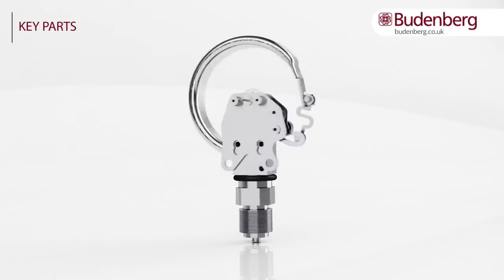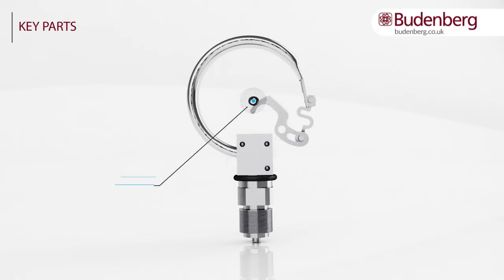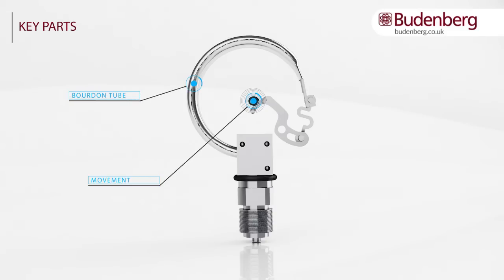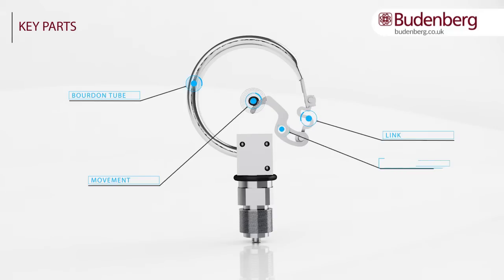The key parts within a Bourdon tube pressure gauge include the movement, which includes the hairspring, gears and linkages. A C-shaped Bourdon tube which is typically bent at an angle of 270 degrees and has a closed end. A linkage which can be adjusted when calibrating, and a quadrant toothed segment which attaches to the movement.